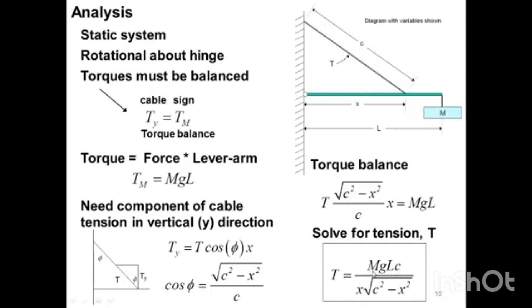We're going to take this equation for tension. Tension is a function of mass of the sign, gravitational constant g which is 9.81 meters per second squared, we have L which is the length of the beam, C is the length of the cable, and we divide that by x times the square root of c squared minus x squared.